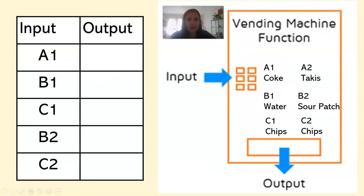All right, so let's just do a couple examples. Here's our vending machine. I've got Coke, water, chips, more chips, Sour Patch Kids, and Takis. So if I type in A1 as my input, then my output is Coke. If I type in B1, the output is water. If I type in C1, the output is chips.